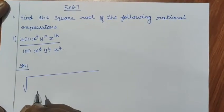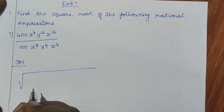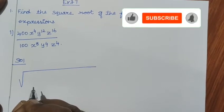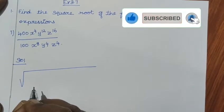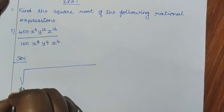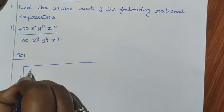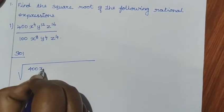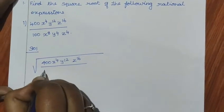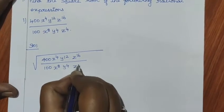Exercise 3.7, first roman, find the square root of the following rational expression. First sum: 400 x power 4 y power 12 z power 16 divided by 100 x power 8 y power 4 z power 4.